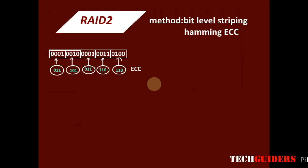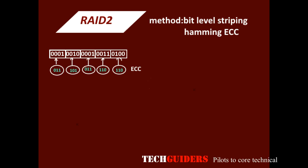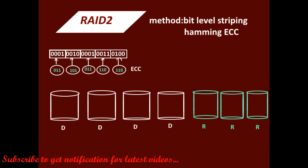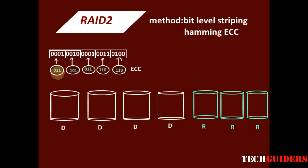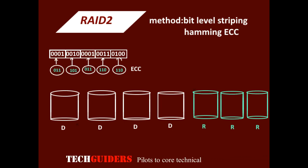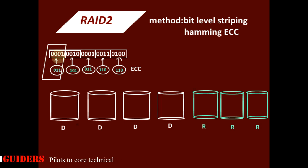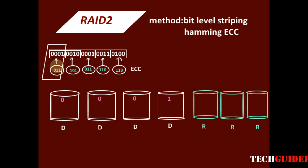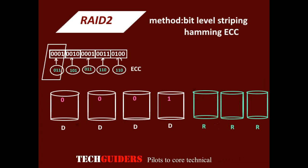In RAID, since we have multiple disks, we keep a separate disk for each bit in the data word, and a separate redundant disk for each bit in the error correcting code. Then we use bit-level striping — we stripe the data bits of the data word across the data disks, and stripe the parity bits of the error correcting code across the redundant disks.